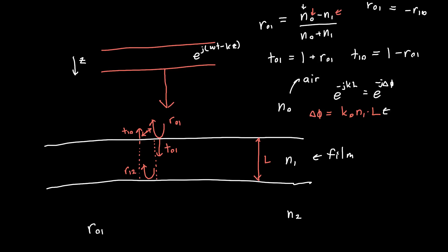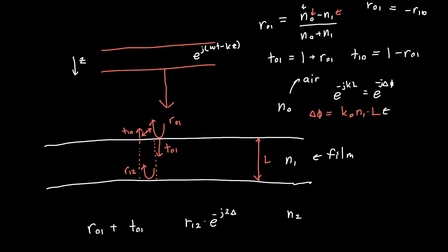Adding up the amplitudes of these first two reflected waves, we get: r01 plus everything that happens to the second wave, which is t01 × e^(−j·delta_phi) × r12 × e^(−j·delta_phi) × t10. We can combine the two exponential factors into e^(−j·2·delta_phi), giving us r01 + t01 · t10 · r12 · e^(−j·2·delta_phi).